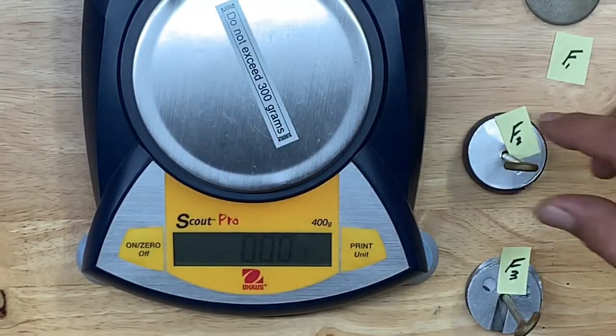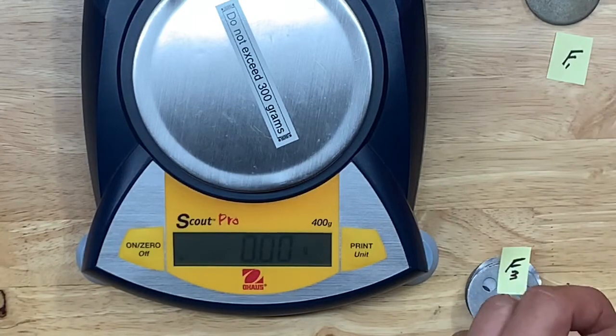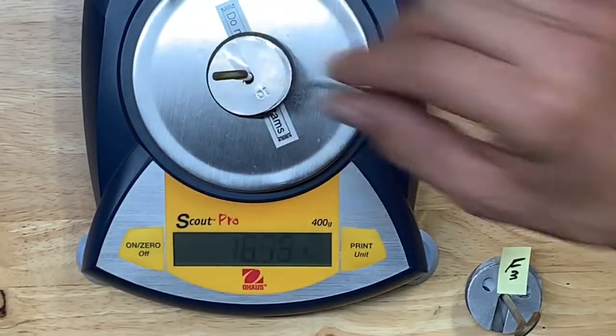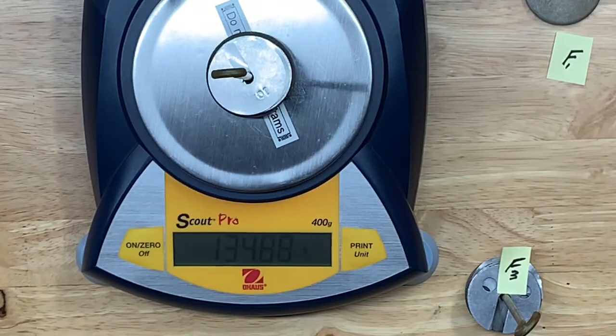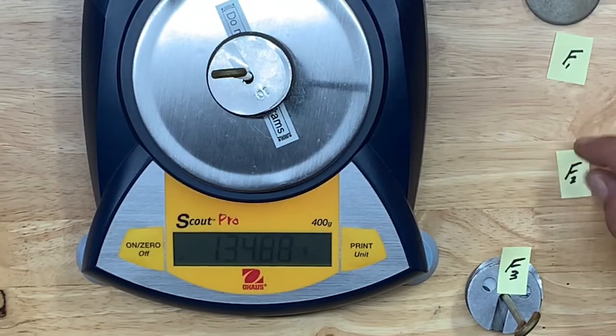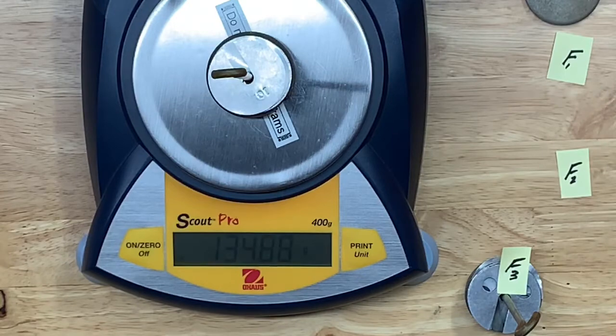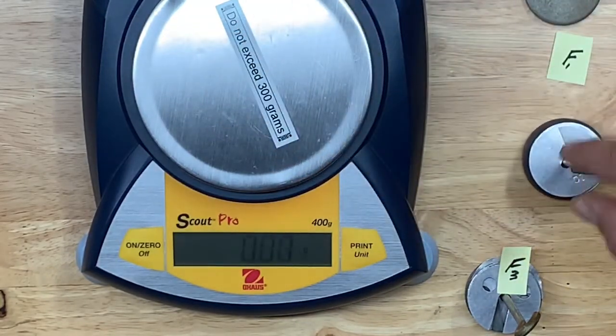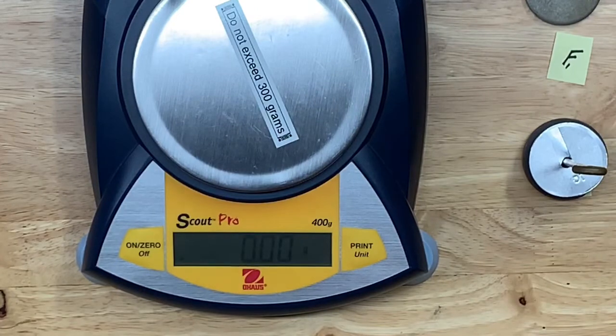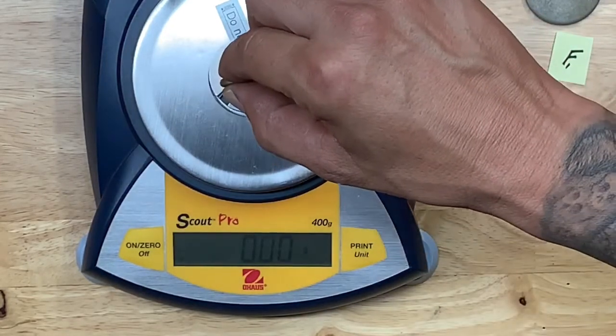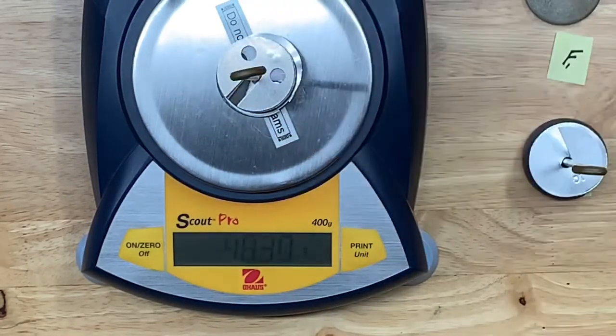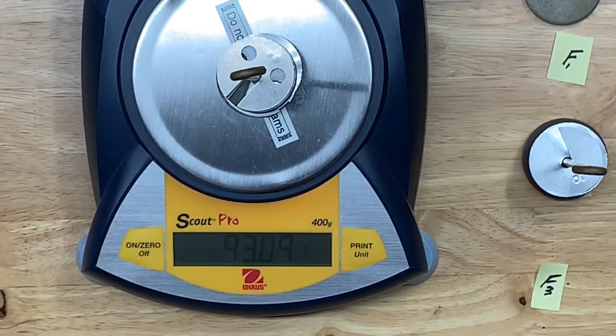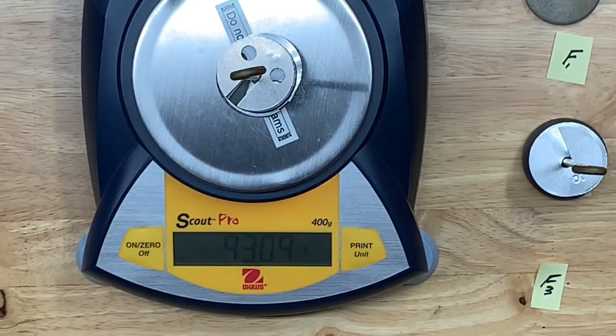So that was f1. Now the hook attached to the string that we called f2 is 134.88 grams. F3 is 93.09 grams.